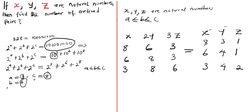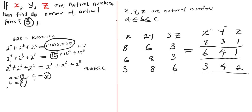So we have the ordered pairs: 1st, 2nd, and 3rd. We were asked to find the number of ordered pairs, and we have 3 pairs. So the number of ordered pairs is 3. We have come to the end of the class and I believe you have learned a lot. Please don't forget to subscribe to my YouTube channel and click the notification icon for updates. Thank you and goodbye.